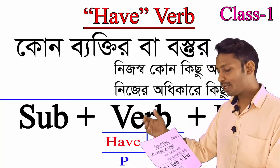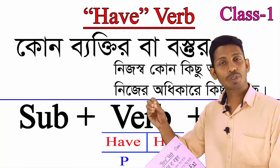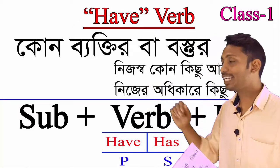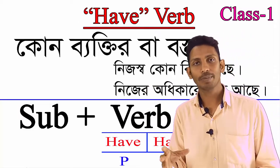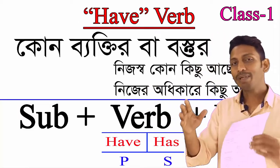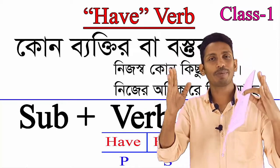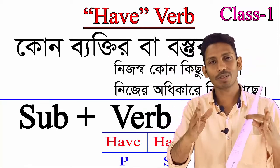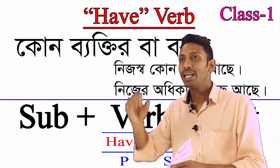The verb is 'have' and 'has.' Have is plural and has is singular. We know that the person has two groups: the third person singular group and the third person plural group.